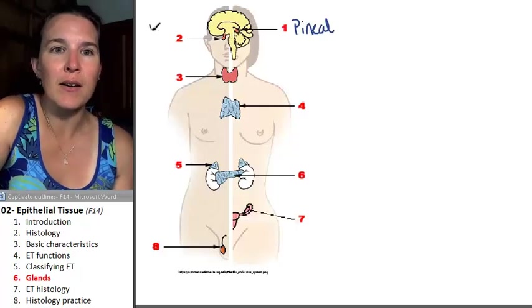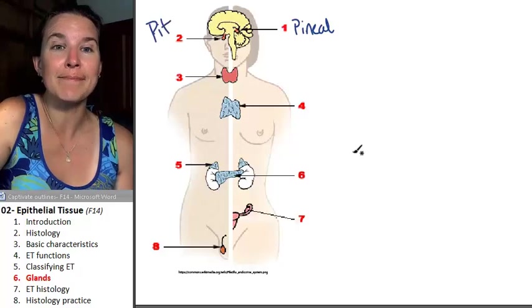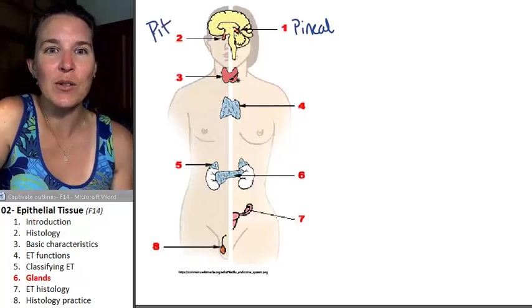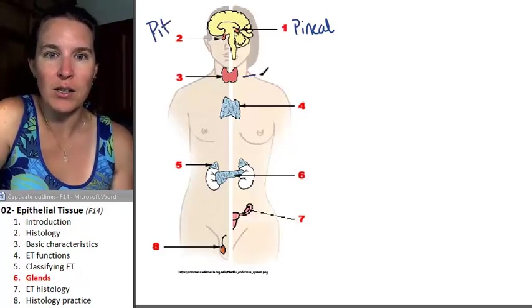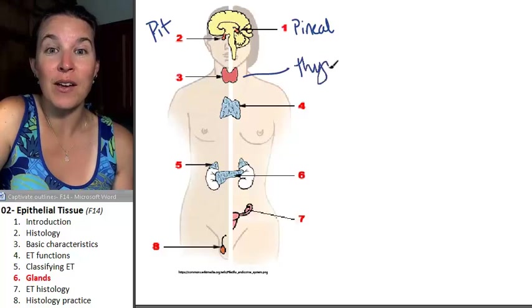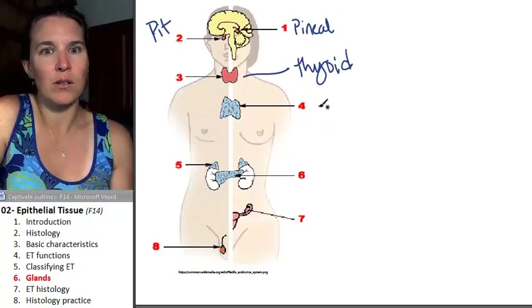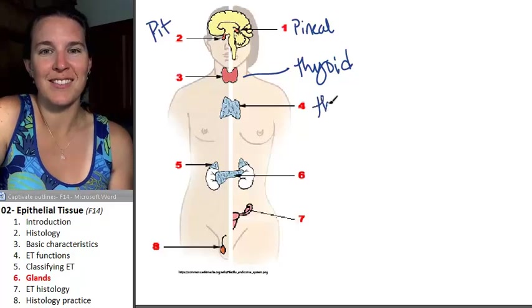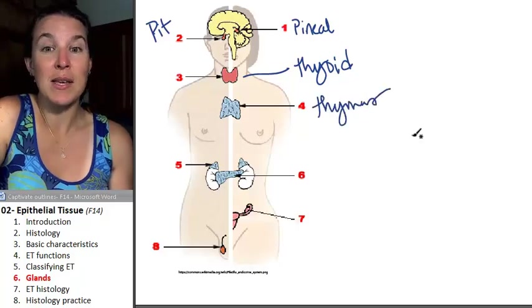This guy right here is the pituitary. Who's this cute little butterfly? That's your thyroid. Who's that cute little heart? That's your thymus.